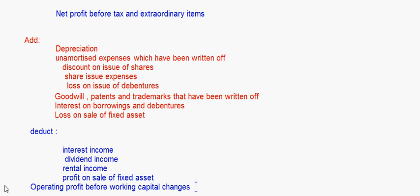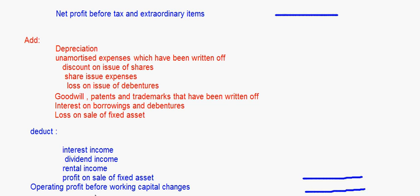When you add and deduct all these items, the final result is called the operating profit before working capital changes. This is the second step. We start from net profit before tax and extraordinary items, add and deduct the relevant items, and arrive at the operating profit before working capital changes. Now I'm going to take a small example.